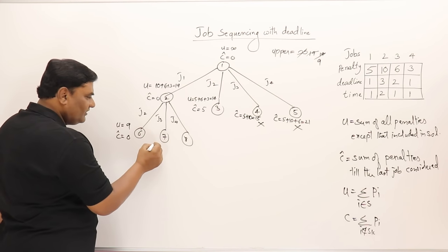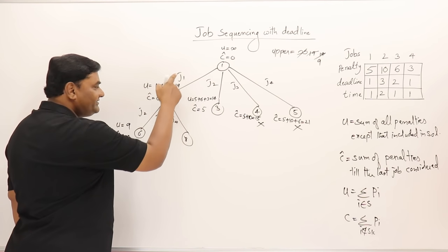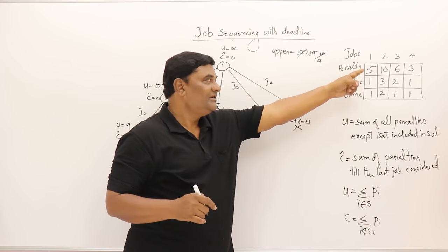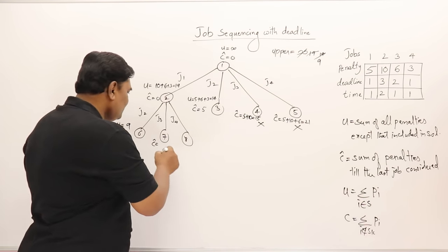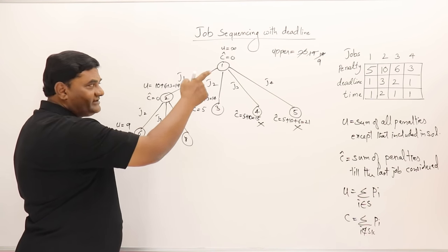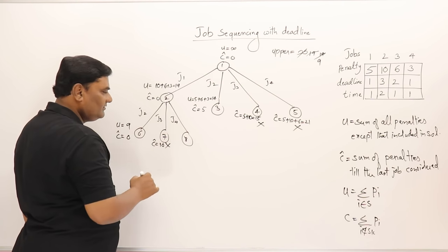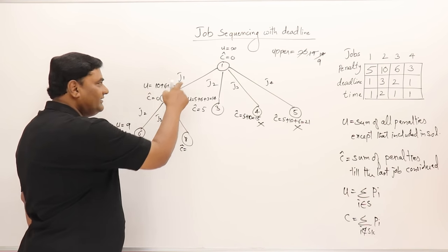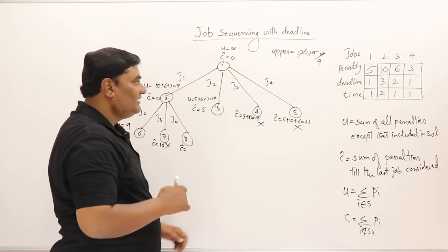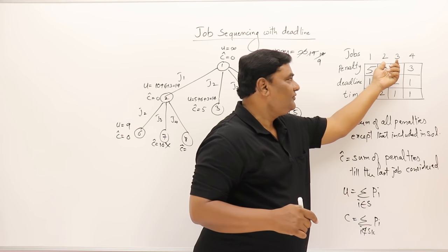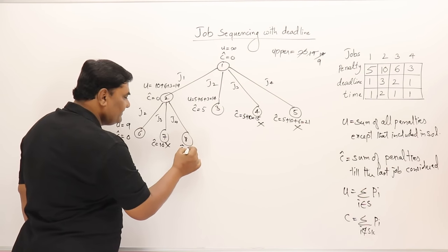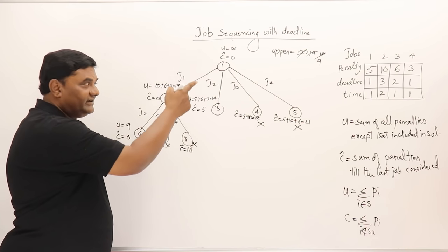For the node with job one and job four, we are not doing job two and job three, so cost is 10 + 6 = 16. That is greater than 9, so kill this node. We now explore the third node (job two only). For node with job two and job three together: cost is 5 (penalty of skipped job one). Upper bound is remaining jobs one and four: 5 + 3 = 8. We update upper to 8.